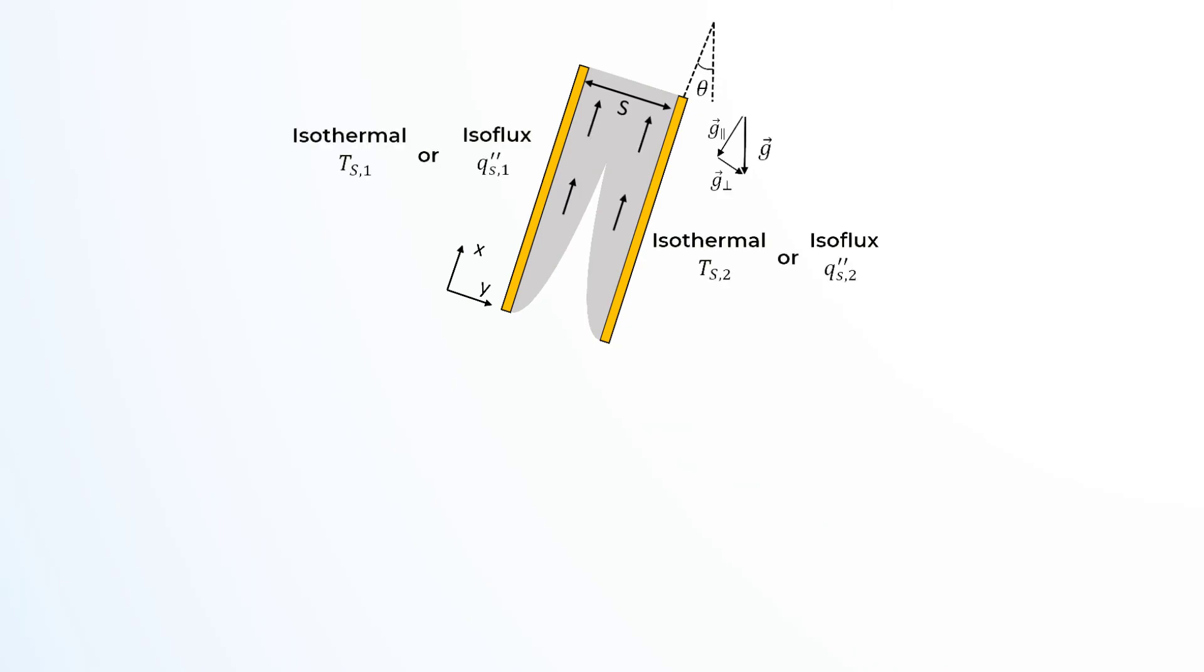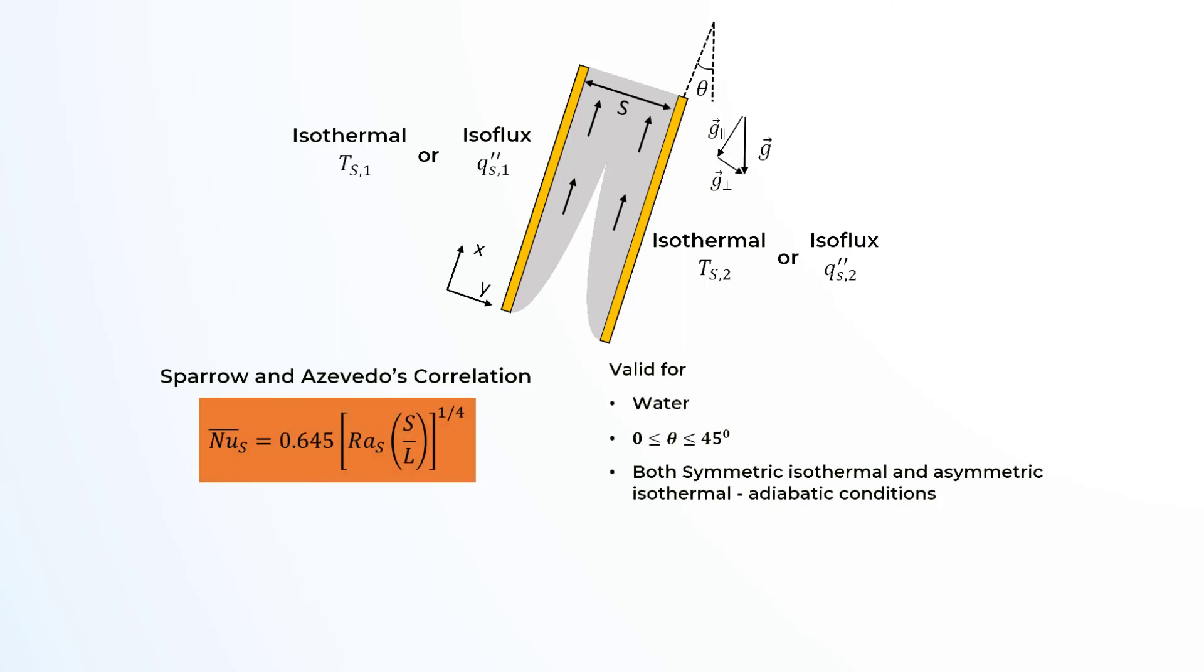Let us switch gears and quickly analyze the inclined parallel plates configuration. Sparrow and Azevedo obtained the heat transfer relations for inclined channels by conducting experiments with water as the working fluid. For small angles of inclination, they obtained the following correlation for both symmetric isothermal plates and isothermal adiabatic plate configurations.